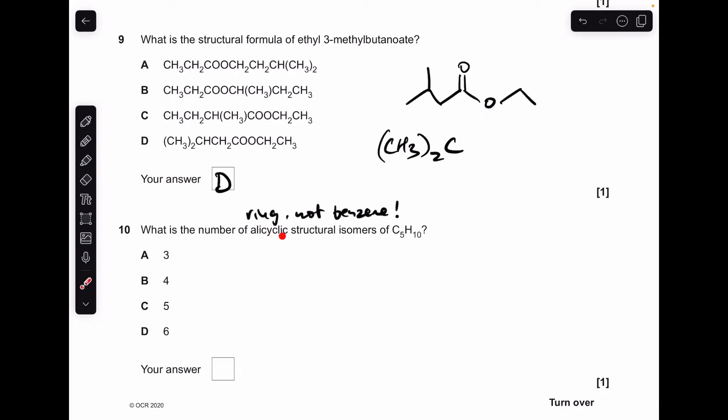Moving on to 10. Just a reminder, alicyclic is a ring, but it can't be benzene. It can't be benzene anyway in this case because we've only got five carbons. But that's what I would say to my students—alicyclic ring, but not a benzene ring.